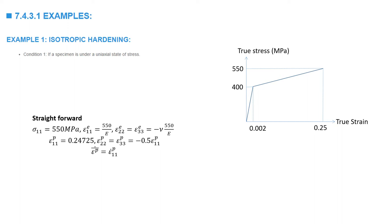The first loading condition is straightforward. At sigma_1 equal to 550 MPa, the elastic strains are obtained from the elastic constitutive law. Since sigma_22 and sigma_33 are both zero, epsilon_elastic_11 equals 550 divided by E, and the other two elastic strain components equal negative Poisson's ratio multiplied by epsilon_elastic_11. The plastic strain component epsilon_plastic_11 is 0.24725, and the other two plastic components equal negative one-half times epsilon_plastic_11.